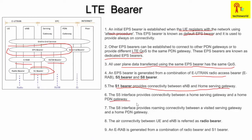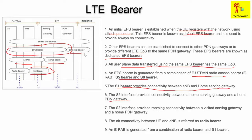For the air interface — that is, between the UE and eNodeB — there is a bearer called the radio bearer. Whatever signaling or data messages travel between the UE and eNodeB will be carried by the radio bearer. Also, there is one more bearer: the external bearer, which is between the PDN gateway and the peer or internet. Whatever messages travel between the PDN gateway and the external world will be carried by the external bearer.